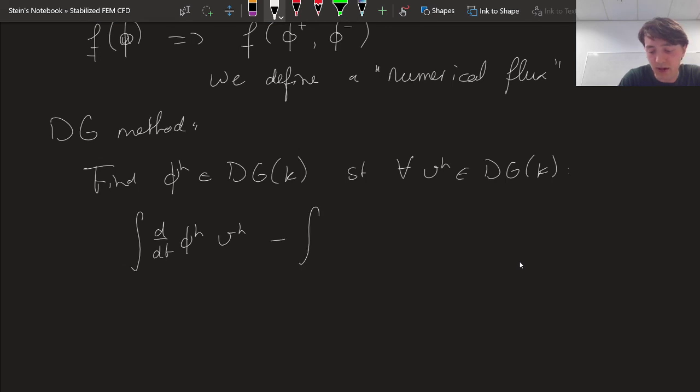the flux inside of the domain is just well defined, so we don't really have a choice here. F of phi_h dot the gradient of v, plus one. And on the boundary,